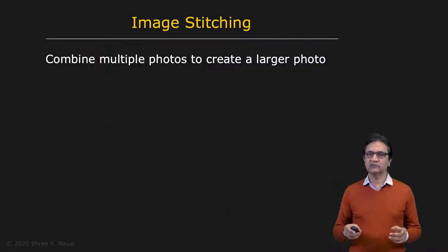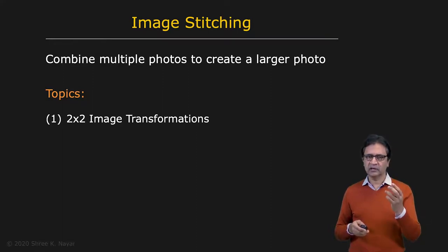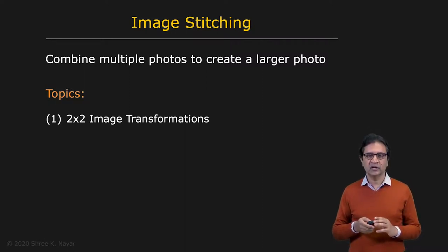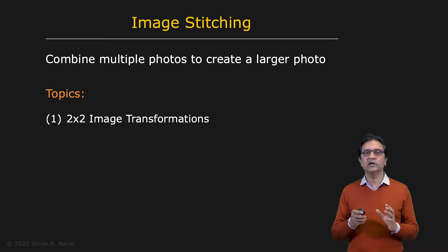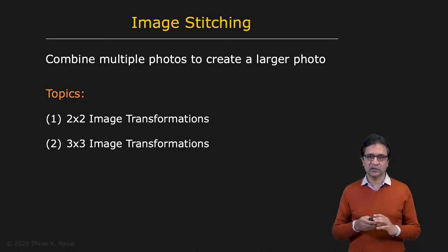The problem we're trying to solve is: combine multiple photos to create a single larger photo. The first topic we'll discuss is image transformations — specifically, what transformation you need to apply to warp and align one image with another. We'll start simple, with two-by-two transformation matrices, and see what you can do with just four numbers. Then we'll argue that a two-by-two transformation is not enough, and that we need three-by-three image transformations — in particular, the projective transformation, given by a three-by-three matrix called the homography.